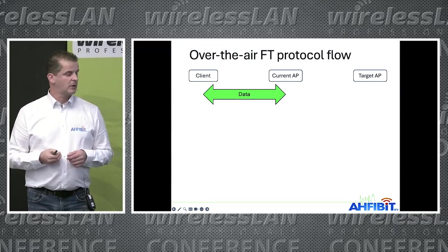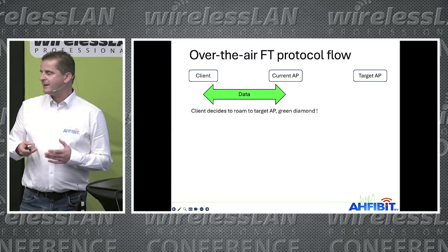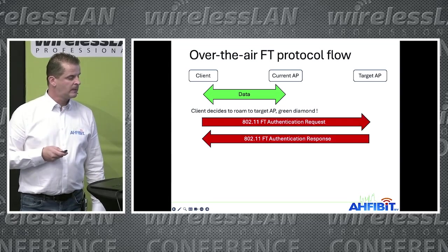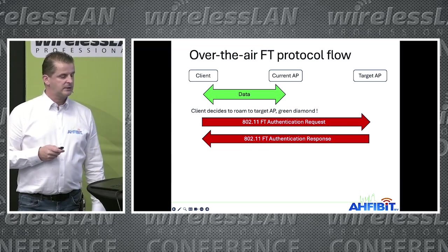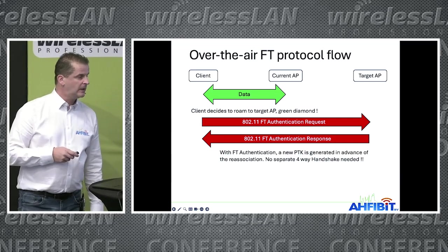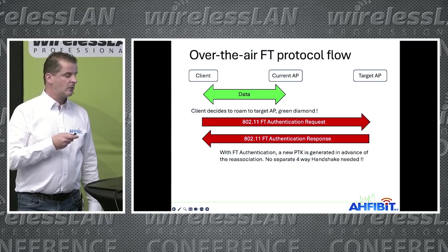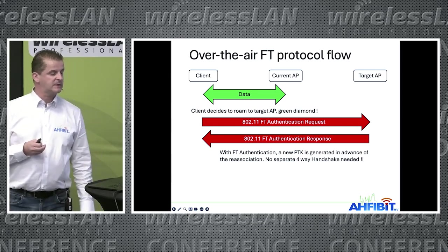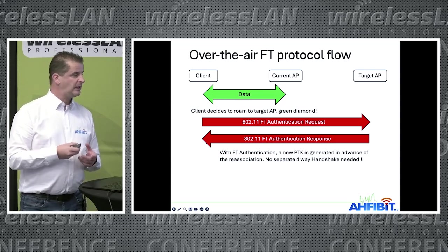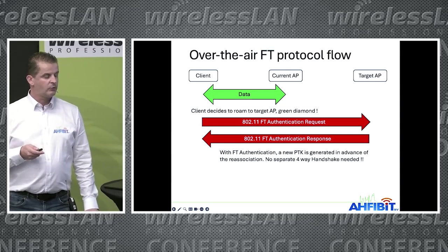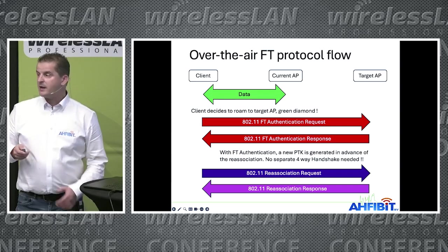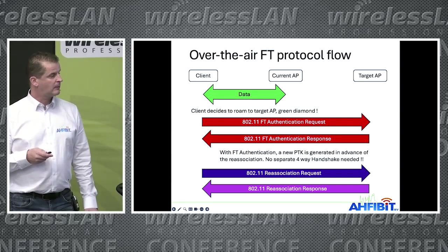The flow works like this: you have your data flowing, and at some point the client decides to roam. You hit the green diamond where the client picks the target AP, then you do the Fast Transition authentication request and response. These two frames are where all the magic happens — they contain the four-way handshake information, including the authenticator and supplicant nonces, so the PTK can be generated before the reassociation request. After reassociation request and response, there should be no four-way handshake.